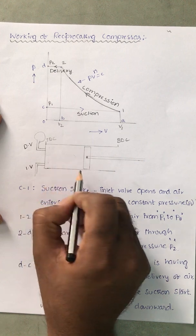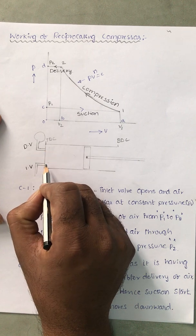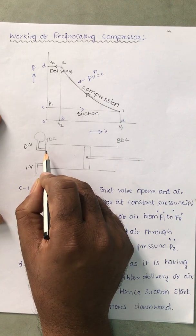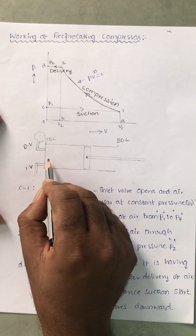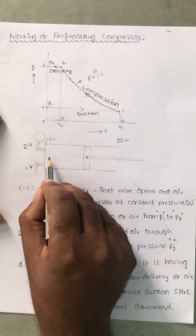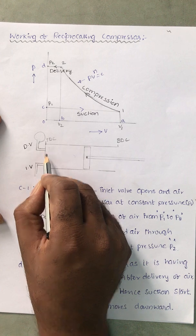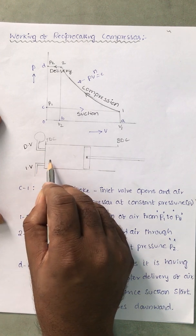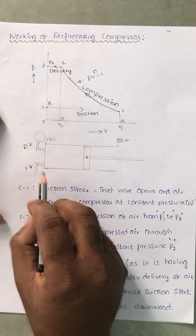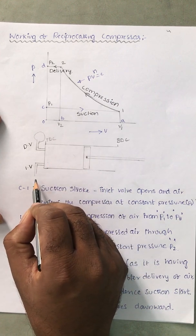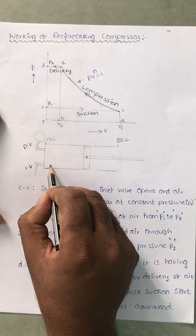This is the piston-cylinder arrangement. When the piston is at the top dead center and starts to move downward, that is called the suction stroke. During the suction stroke, the inlet valve opens and the delivery valve remains closed. As the piston moves downward, a low pressure is created inside, and since the outside air is at atmospheric pressure and inside air is below atmospheric pressure, air enters into the cylinder.